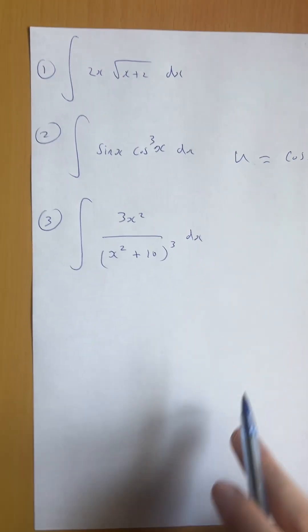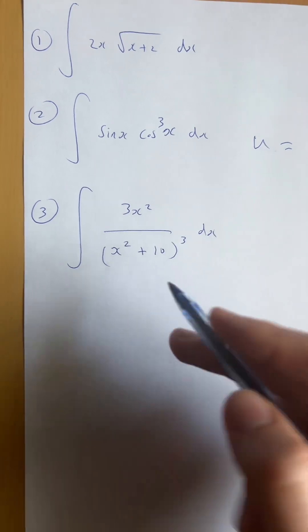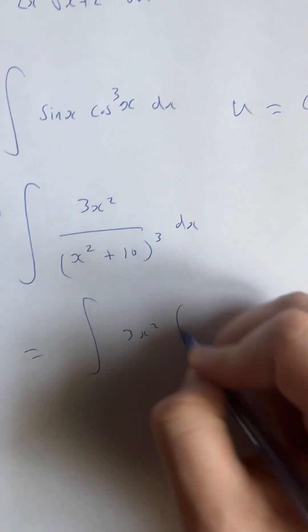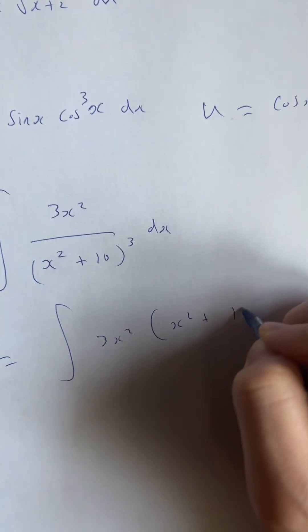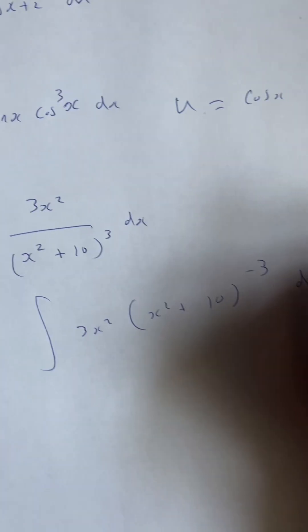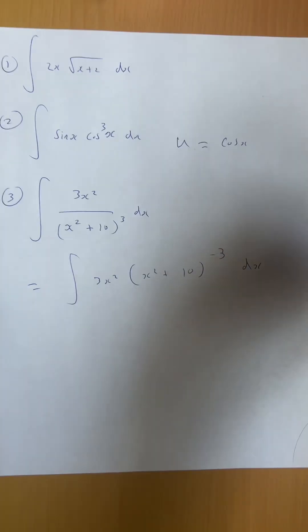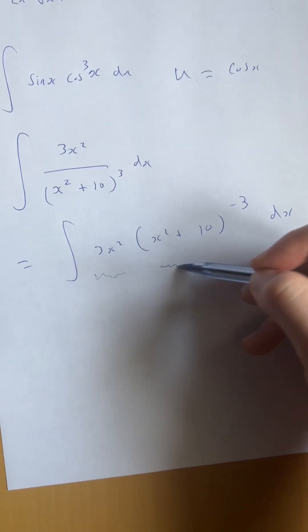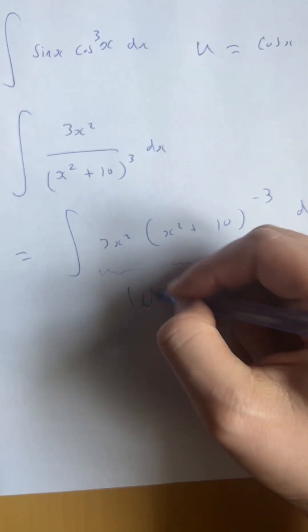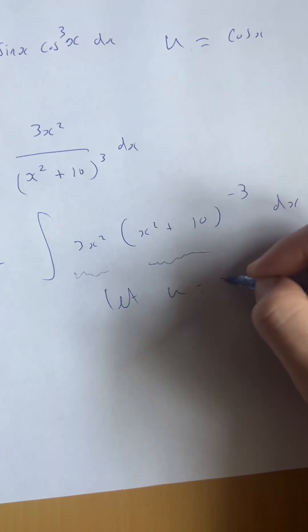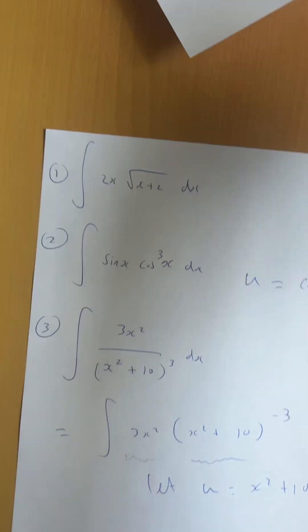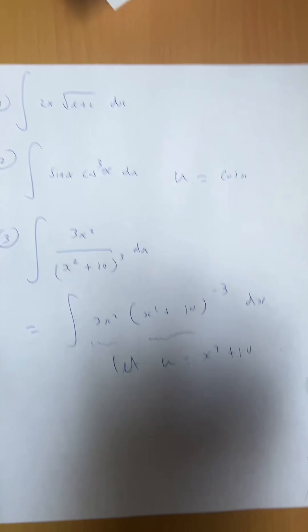Similar with this example too. You might write this as the integral of 3x squared times (x squared plus 10) to a power of minus three, and think you have to do integration by parts. But you don't, because 3x squared is pretty similar to x squared plus 10, and that second function is raised to a weird power. So let u equal the thing inside — and you'll see, as I go through this example, how it works out quite nicely.